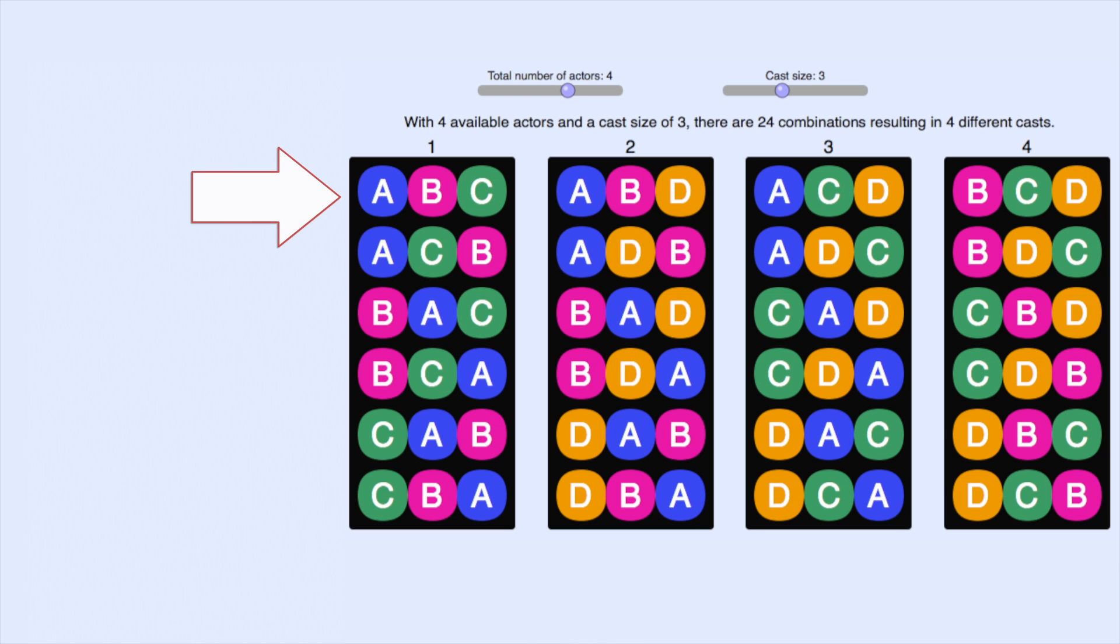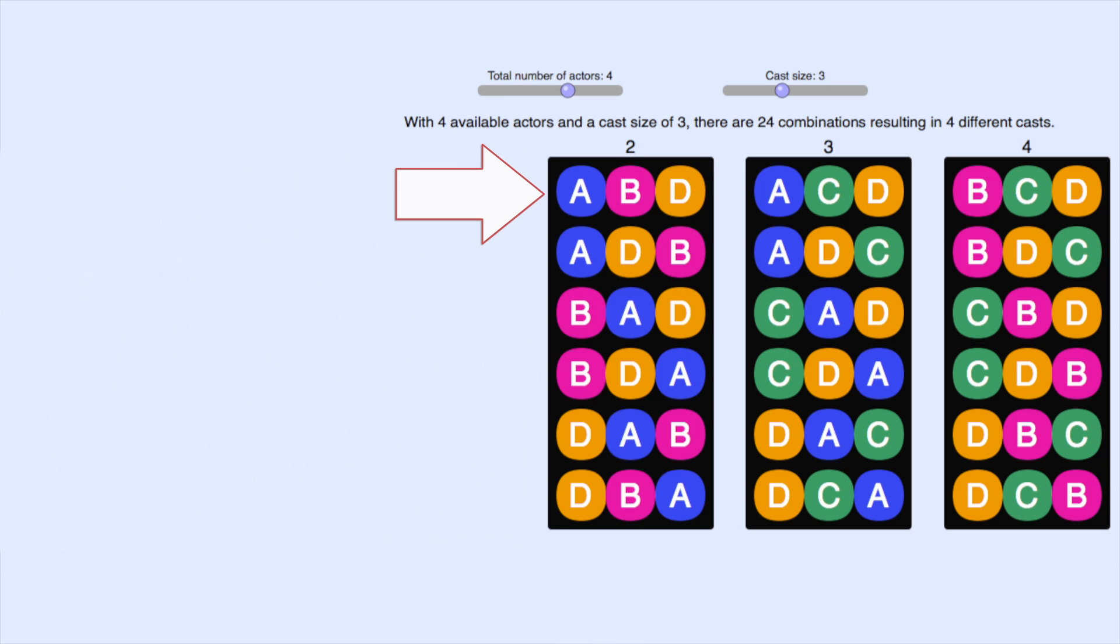Mathematicians call each of these orderings a permutation. Now the number of permutations is represented by the number of rows in each box. The same is true in the second cast involving A, B, and D.